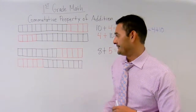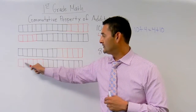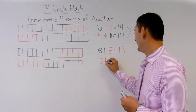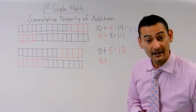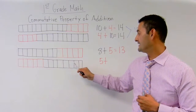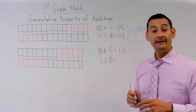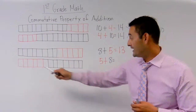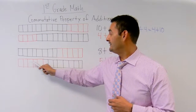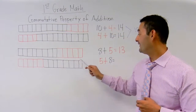Now let's look at this piece here. How many red boxes do I have? One, two, three, four, five. Plus — how many black boxes do I have? One, two, three, four, five, six, seven, eight. Equals — how many boxes do I have all together right here? Let's count: one through thirteen — thirteen.